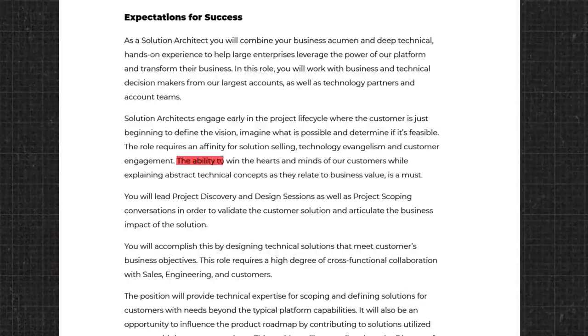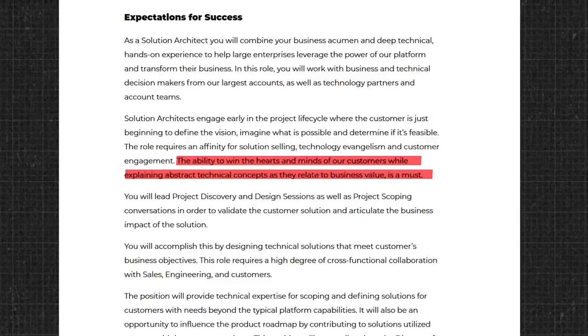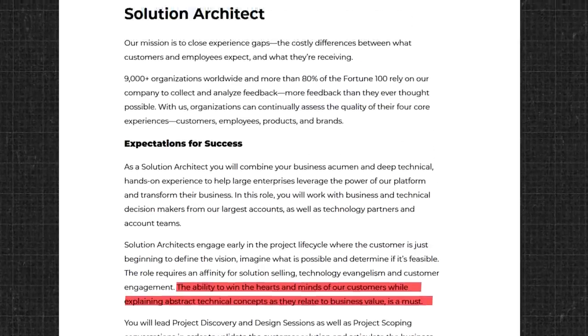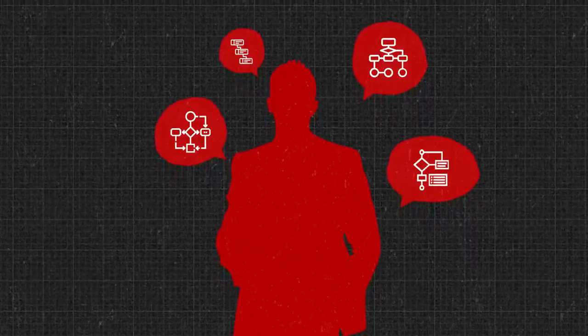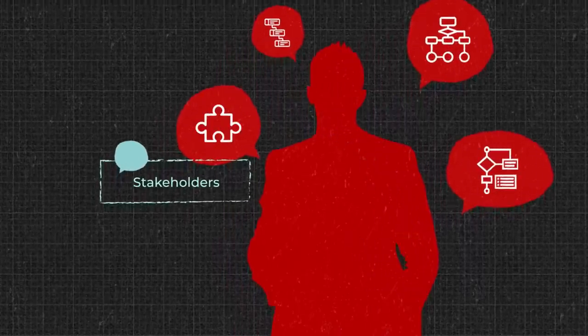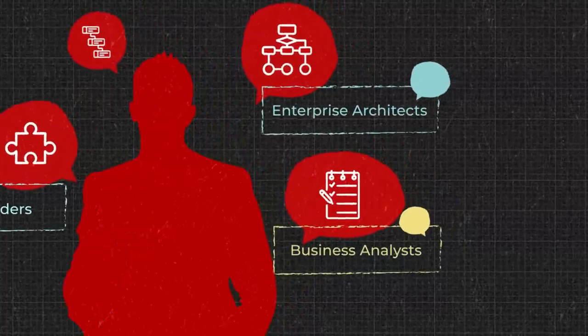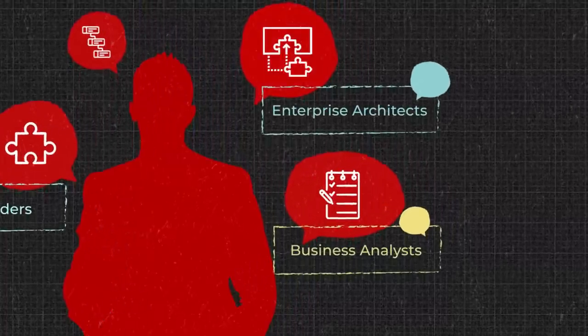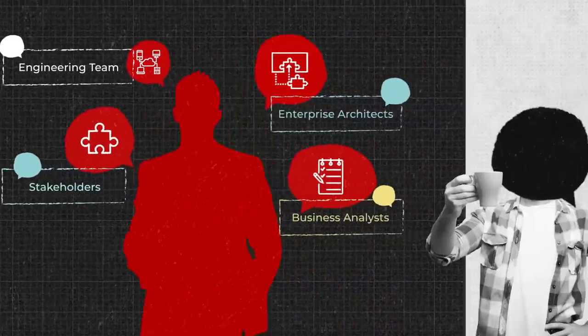"The ability to win the hearts and minds of our customers while explaining abstract technical concepts as they relate to business value is a must." This is a quote from a job posting for a solution architect at a tech company. Solution architects do lots of talking. Diagrams look static, but making them, reiterating, and tweaking entails a lot of communication with different parties: stakeholders and project managers to capture the business problem and pitch a solution; business analysts to work over requirements; enterprise architects to fit a solution into the corporate ecosystem; and the engineering team and software architects to break down tech details.